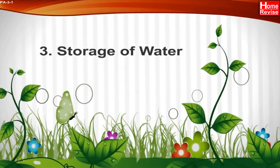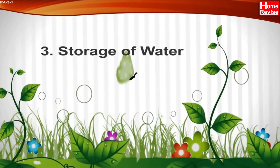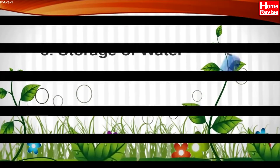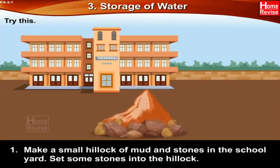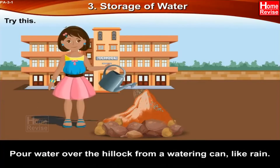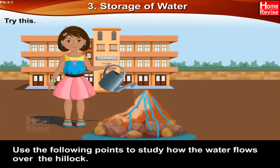Chapter 3: Storage of Water. Try this activity. Make a small hillock of mud and stones in the school yard. Set some stones into the hillock. Pour water over the hillock from a watering can, like rain. Use the following points to study how the water flows over the hillock.